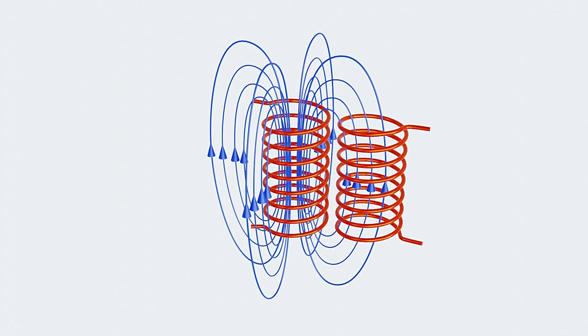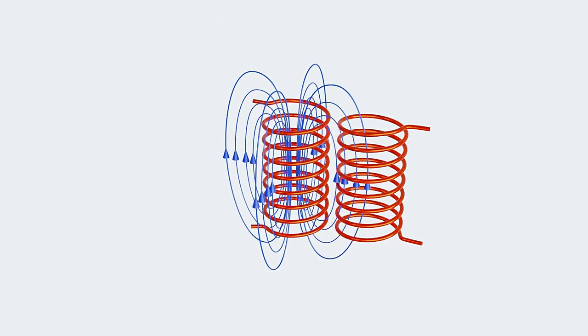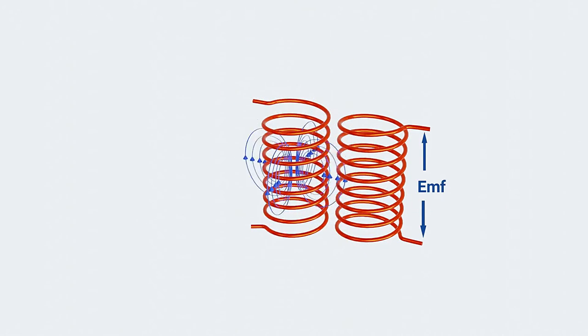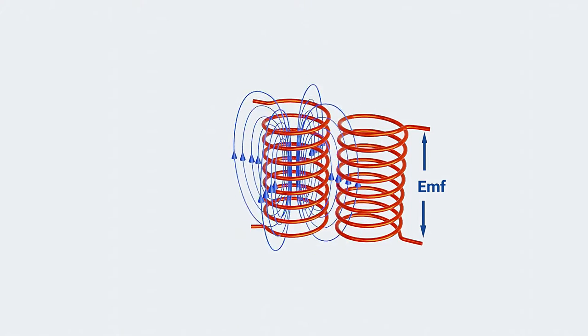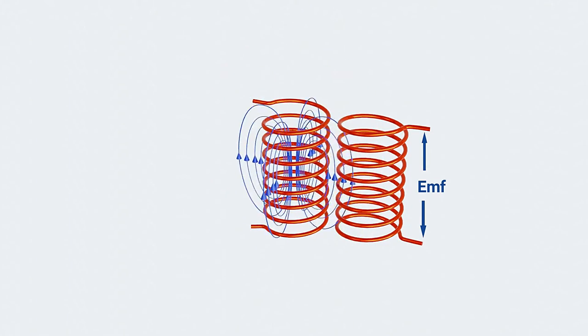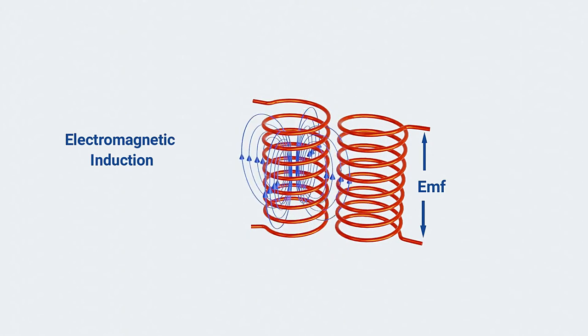If we introduce another coil near the first coil, the changing magnetic field from one coil produces electromotive force across the other coil. This creation of EMF in a conductor inside a changing magnetic field is known as electromagnetic induction.